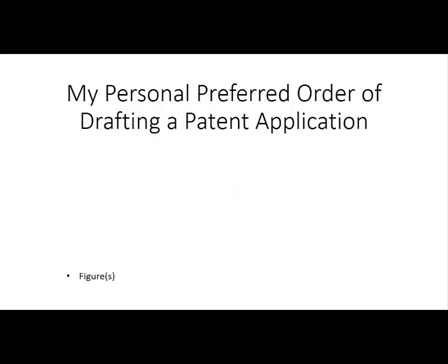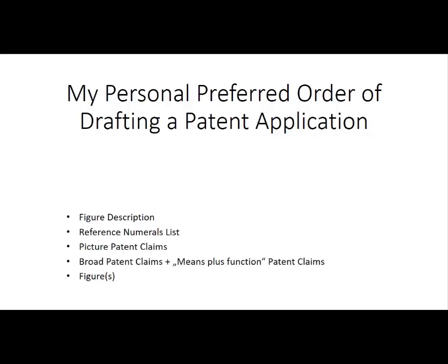I always start with the figures. The figures are the main point of a patent application because this is where everything starts. The inventor usually has some figures that he is using for explaining his invention. Starting from the figures I do the figure description, and by doing so I also create a reference numerals list. Starting from the figure description I can draft my picture patent claims, which are very specific.